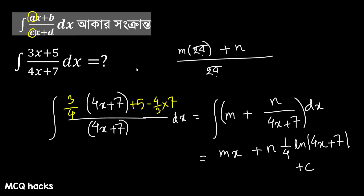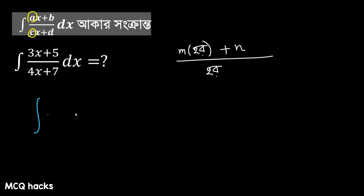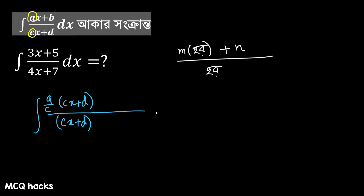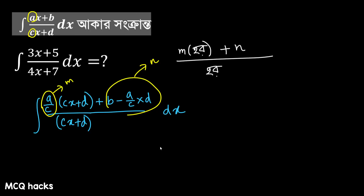OK, it might look a little messy right now, but I'll show the general format — it will definitely become clear. Look, our general format: integration of numerator over cx plus d. Here what will happen: our cx plus d — so it will be a by c, this is our m value, times cx plus d. Now one constant will be added — that constant is such that when you add it, you get b in the numerator. Then what extra you added — subtract it. What extra: a by c into d — that's the extra. So a by c into d, then dx.